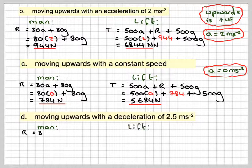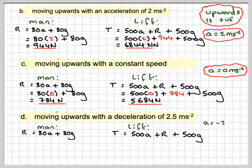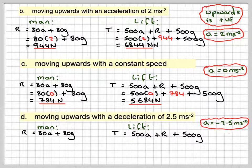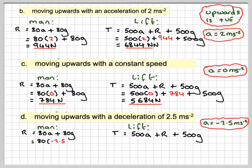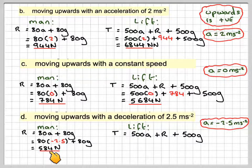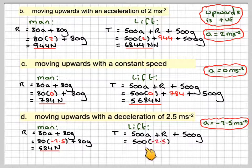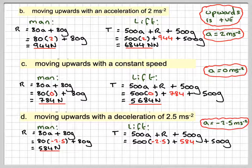Case 3: the lift decelerates while moving upward, so the acceleration acts in the opposite direction — it is negative. Taking a equals minus 2.5 m/s², the reaction is R equals 80 times minus 2.5 plus 80g, giving 584 newtons. The tension is T equals 500 times minus 2.5 plus 584 plus 500g, and the tension will also be less.